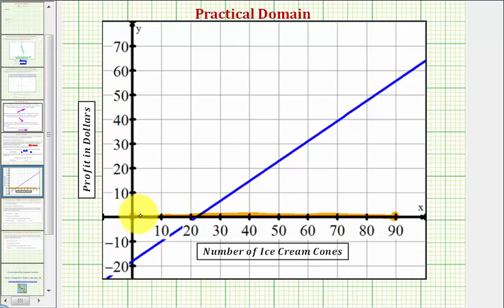Notice how the function value of profit when x is zero would be the y-intercept here. This would be the lower bound of the practical range. The upper bound of the range would be the profit when x equals 90, which would be approximately here. So this would be the practical range.